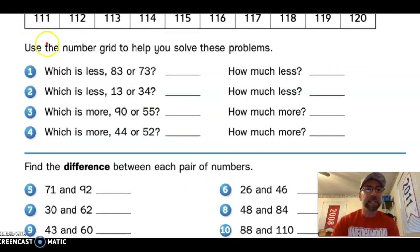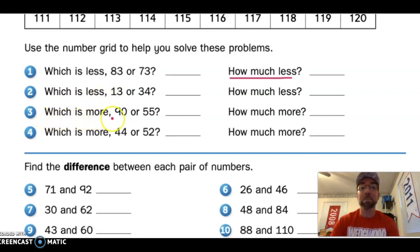So let's see what we have to do first. At the top section it says to use the number grid to help you solve these problems. Which number is less? 83 or 73? How much less? So you need to find your difference. Again another problem with less. And then you have some problems which is more? A greater number? And how much more? Go ahead and do the first four problems.